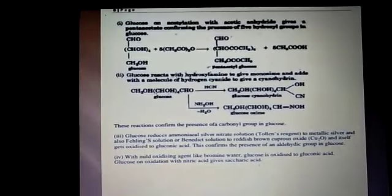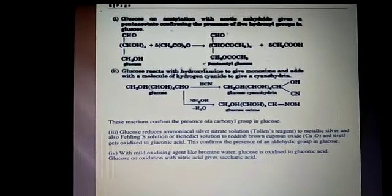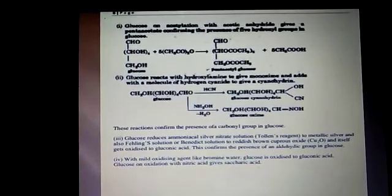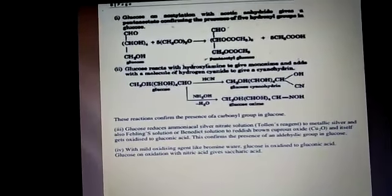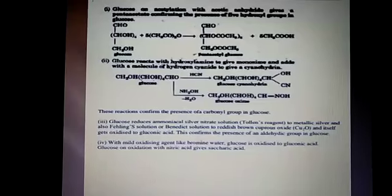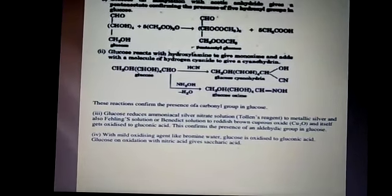On reduction with sodium amalgam, glucose gives sorbitol — a hexahydric alcohol. Glucose, when reacted with HI in the presence of red phosphorus, gives n-hexane, suggesting 6 carbon atoms in a straight chain. Similarly, the glucose cyanohydrin on hydrolysis with dilute acid gives a hydroxy acid which on reduction with HI and red phosphorus gives n-heptanoic acid.